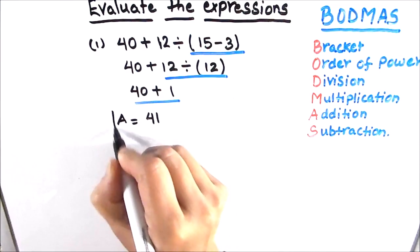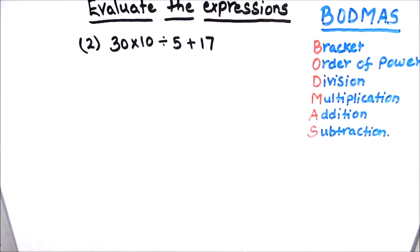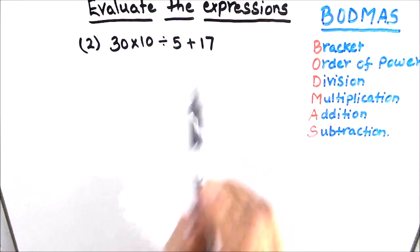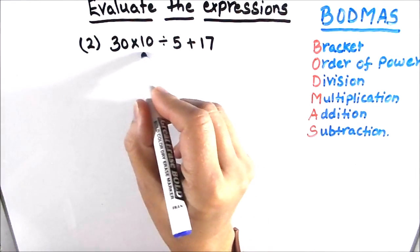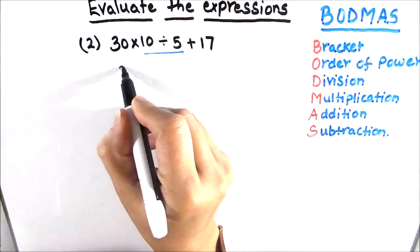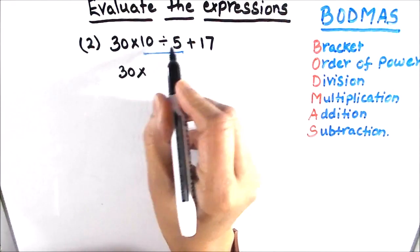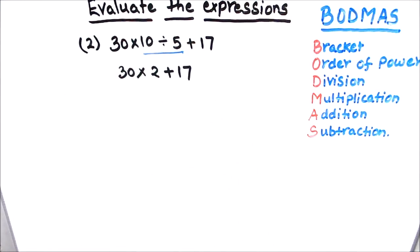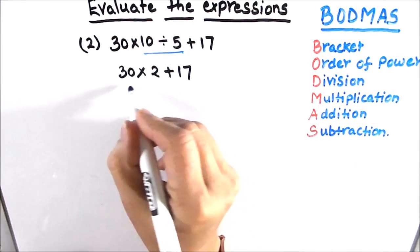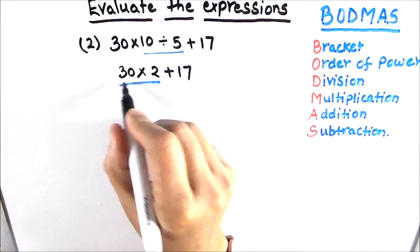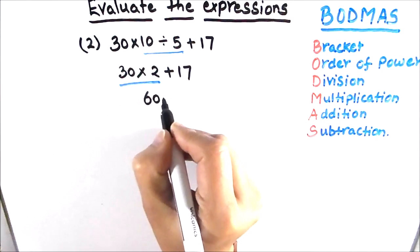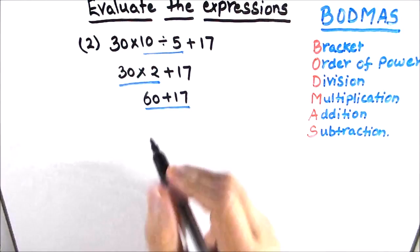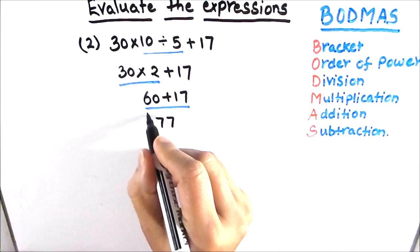Let's solve our second example, where we have multiplication, division, and addition in our expression. According to BODMAS we first solve division: 10 divided by 5 is 2. Now we have 30 times 2 plus 17. We multiply first: 30 times 2 is 60. Then we add: 60 plus 17 is 77. So 77 is our final answer.